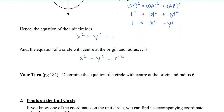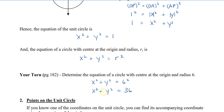Let's take a look at an example: determine the equation of a circle with the center at the origin and radius 6. We just plug 6 in for r, and we get 6 squared. So x squared plus y squared equals 36. The center is at the origin (0, 0) and the radius is 6.